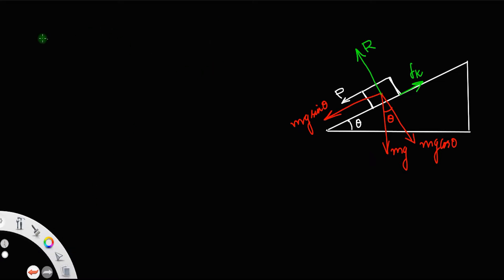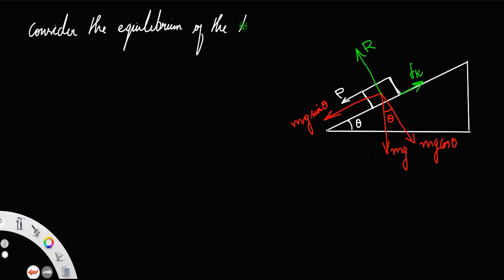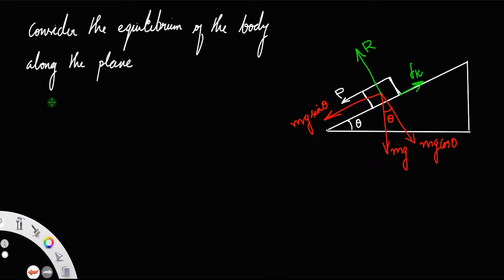Consider the equilibrium of the body along the plane. The forces acting down the plane must be equal to the forces acting up the plane. The forces acting downward along the plane are P plus mg sin theta.